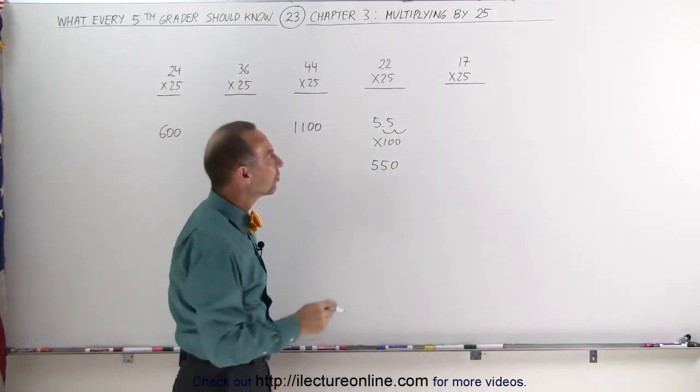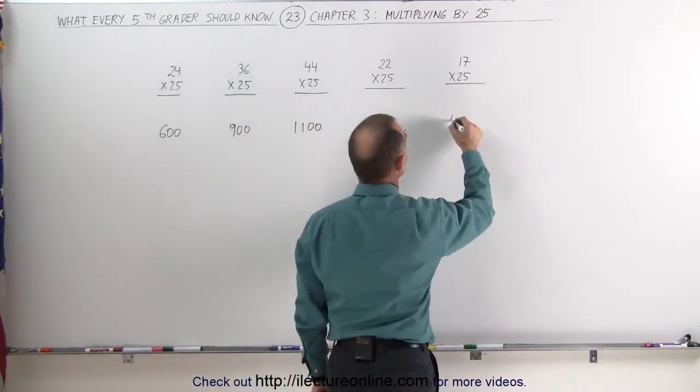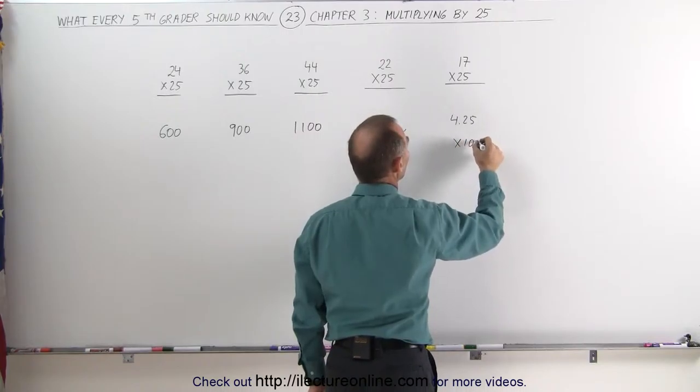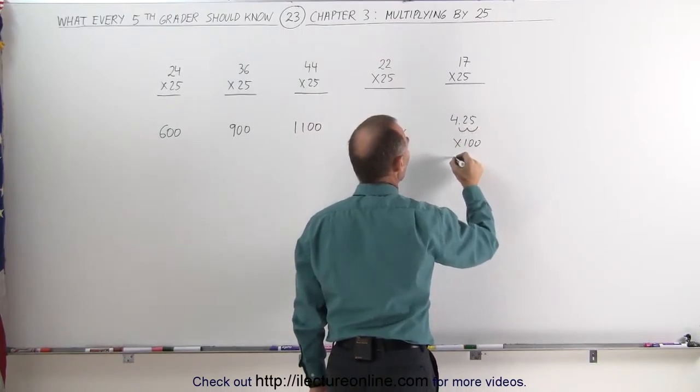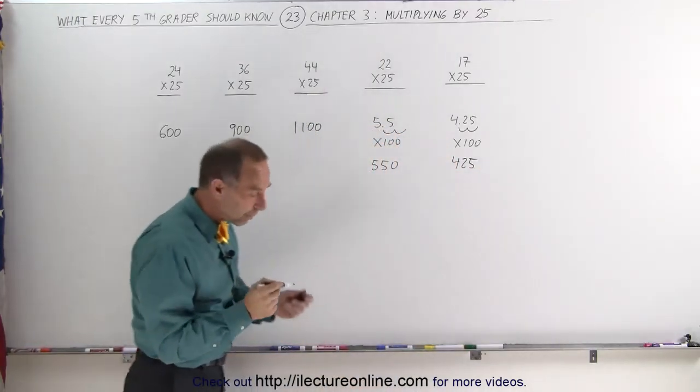How about the number 17 times 25? You take 17 divided by 4, that would be 4.25, and then multiply times 100, which means move the decimal place over twice, and you get 425. So the way you multiply times 25,